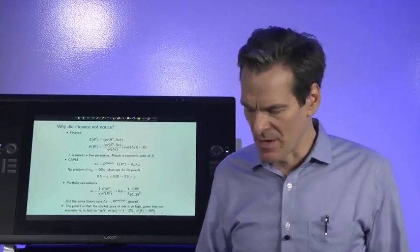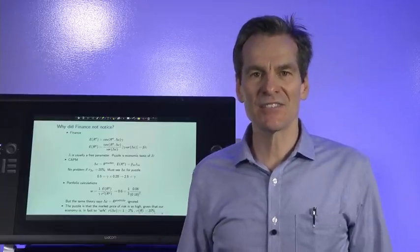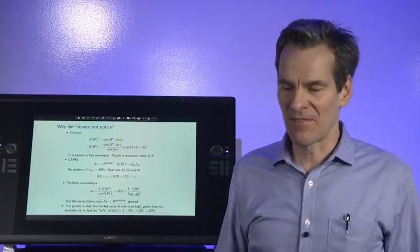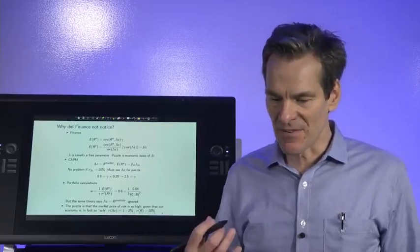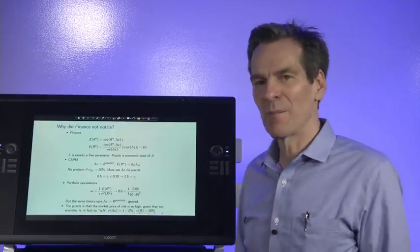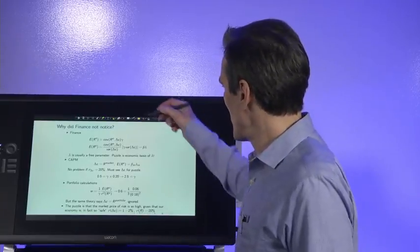First though, a couple of comments on the whole equity premium thing. Why did it take finance so long to notice? Finance went on for years before the equity premium puzzle was discovered. And this seems like a pretty big problem at the root of finance. Now remember, expected returns is covariance of returns with consumption growth times the risk aversion coefficient.